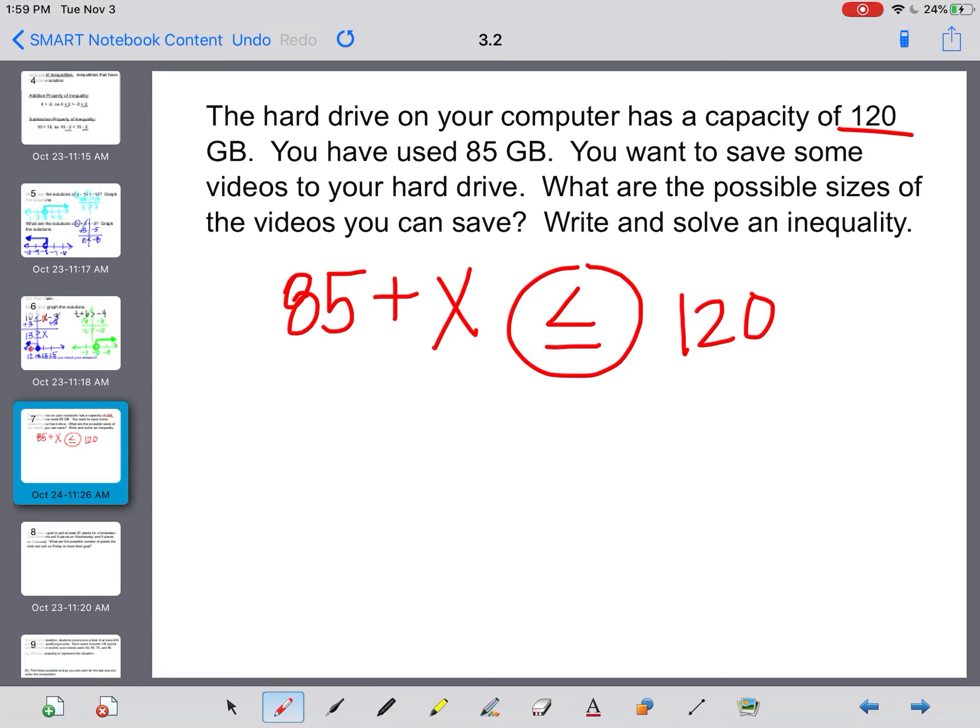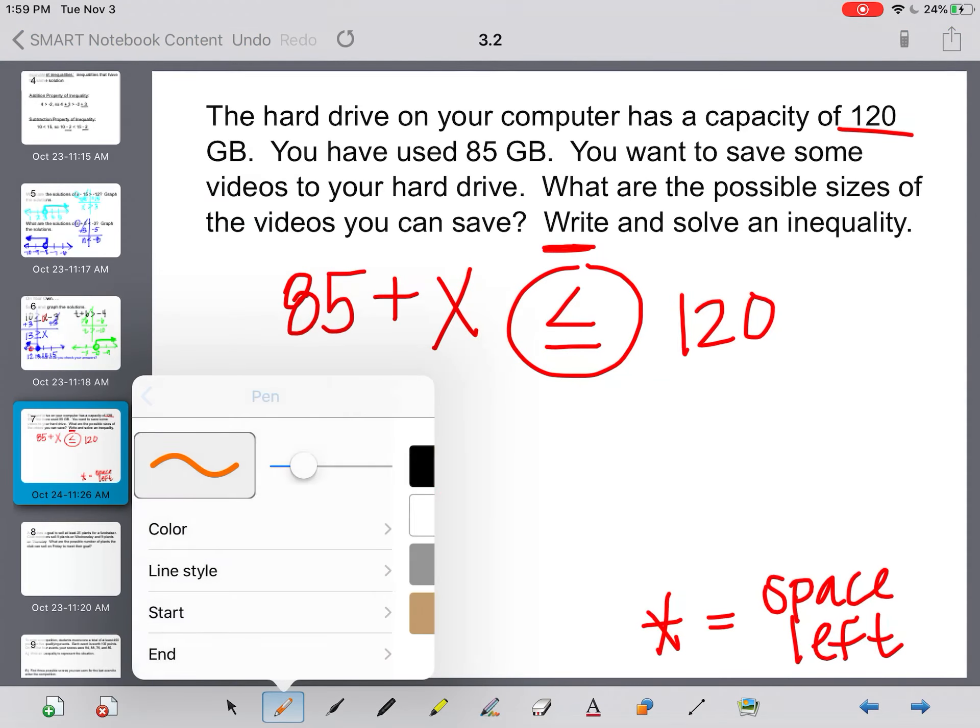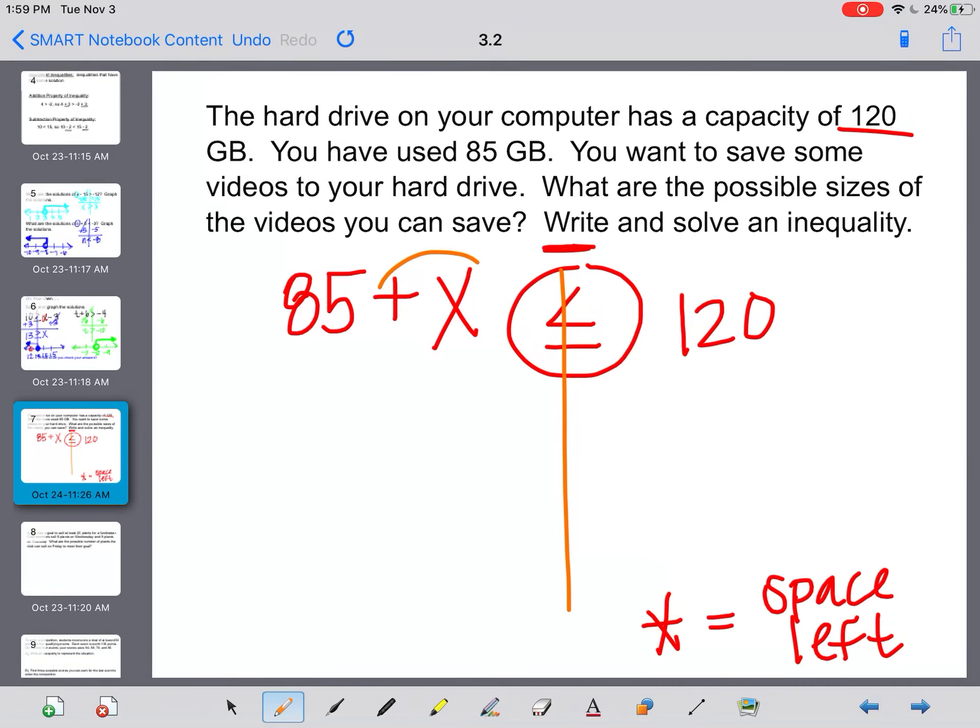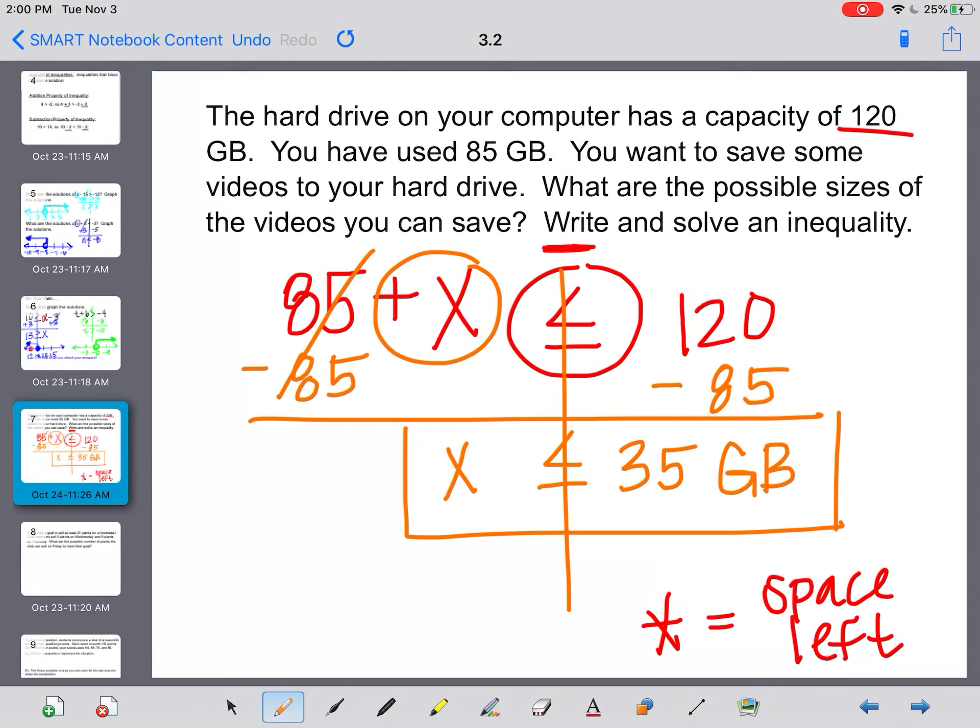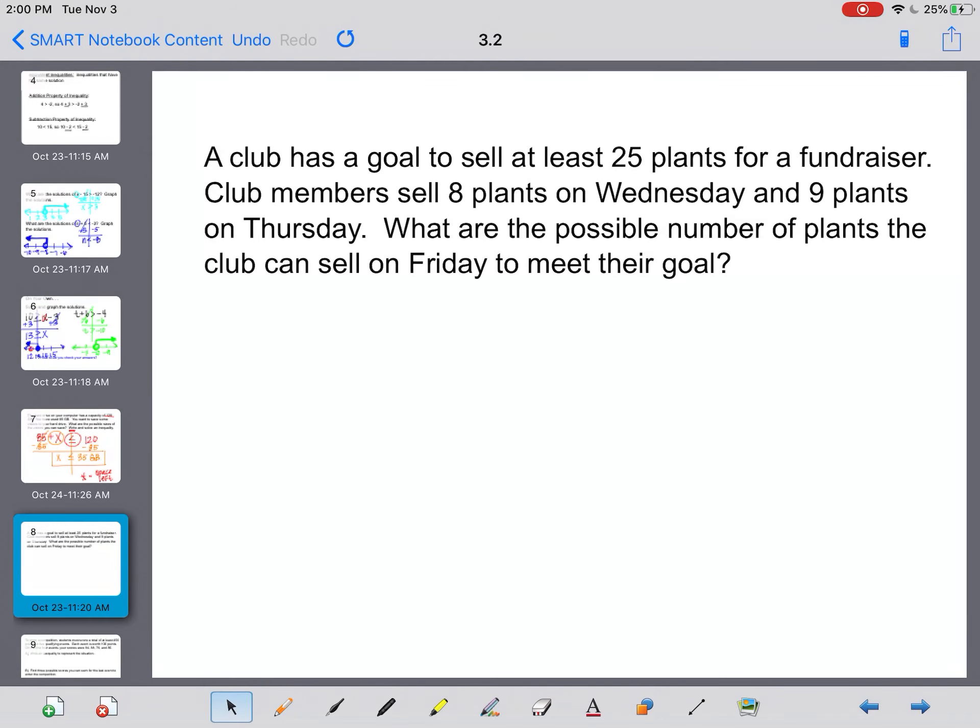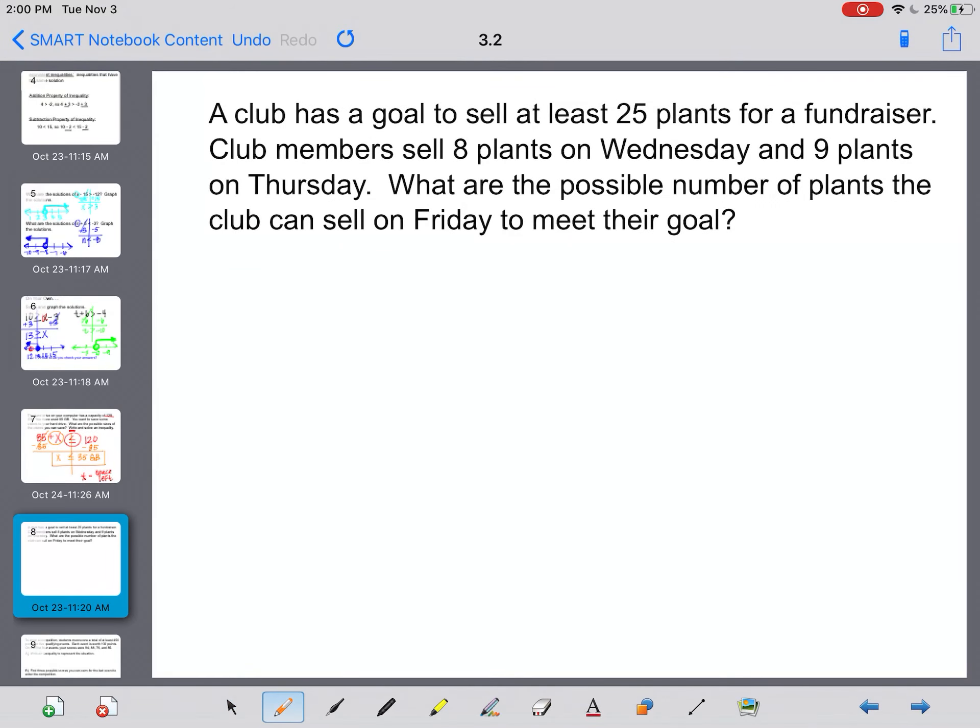Okay, so the 85 that we've used plus whatever is left has to be either less than or equal to 120. Okay, and then this x will tell me the space that I have left. Okay, so there's the inequality part. Now we're going to solve it. Okay, we'll put our train tracks. I'm trying to get x by itself, so I need to subtract 85 to move it to the other side. That leaves me with x is less than or equal to 35 gigabytes, meaning I have 35 gigabytes left to use. So the video that I record can be 35 or less.